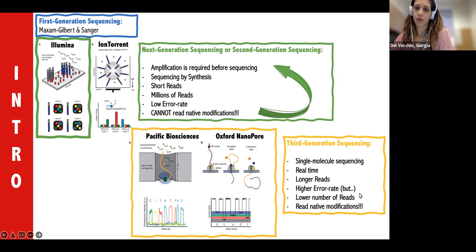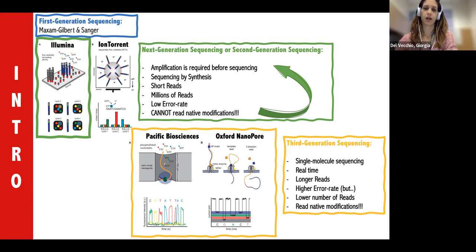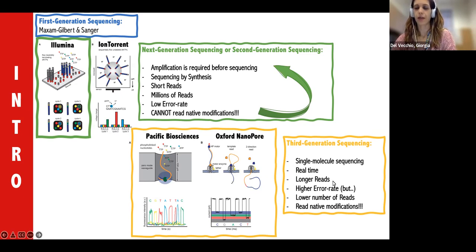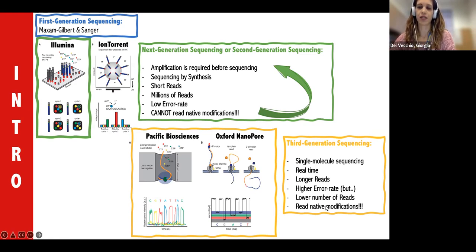Third generation sequencing — the two main platforms are Oxford Nanopore and PacBio. For Illumina and Ion Torrent we have millions of molecules; here it's single molecule sequencing in real time. It's for longer reads with a higher error rate compared to NGS, and you don't get the millions of reads from NGS, but it can read native modifications.